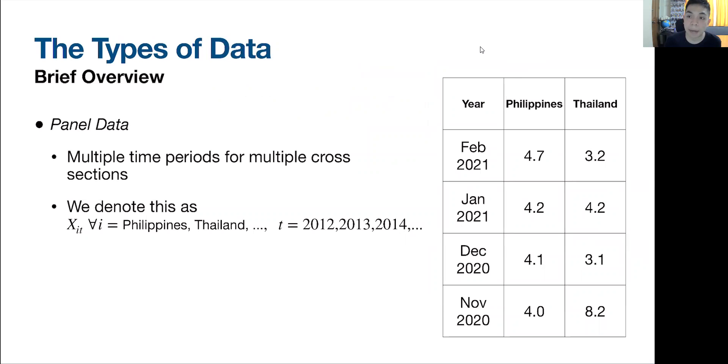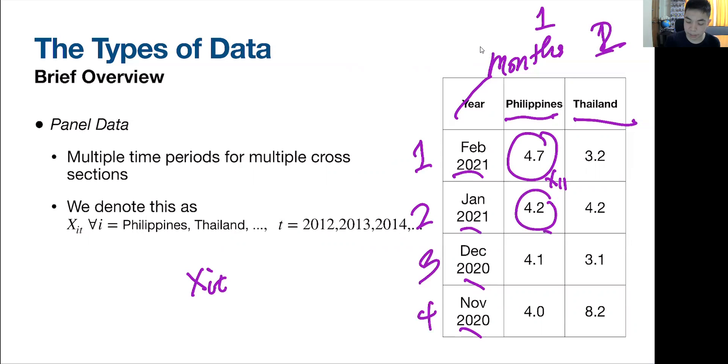The last type of data is panel data. Typically, it's where we have multiple time periods for multiple cross-sections. For example, here, we have both Philippines and Thailand, that's more than one. And we have data points on them on various months, more than one month. So, it's like a cross-section plus a time series. You get a panel data set. And now, you have XIT, because they both vary through time and through space. For example, 4.7 is X11. Let the Philippines be 1, Thailand be 2. This be time period 1, this is 2, 3, and then 4. This one is X21, month 2 for the Philippines. This is month 3 for the Philippines. This one would be month 2 for Thailand, which is X32.